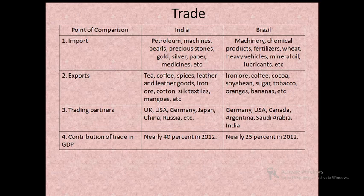Let us do a comparative study of India and Brazil with reference to imports, exports, trading partners and contribution of trade in GDP. India imports petroleum, machines, pearls, precious stones, gold, silver, paper and medicines. Brazil imports machinery, chemical products, fertilizers, wheat, heavy vehicles, mineral oils and lubricants.